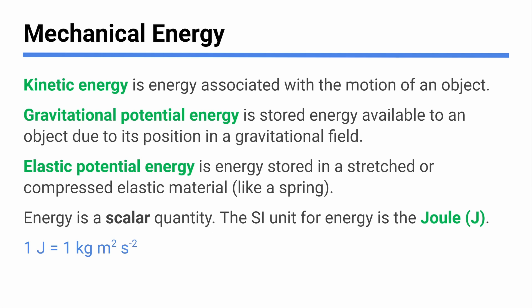Energy is a scalar, so it's not a vector — we don't need to worry about direction, there is no direction for energy. That doesn't mean we'll never deal with negatives, because scalars can be negative. We measure energy in joules, and here are the base units of a joule. With the equations we're about to look at, see if you can make sense of why these units work out the way they do.